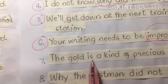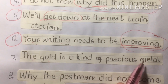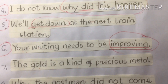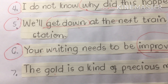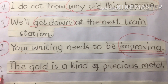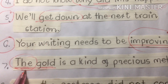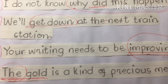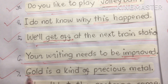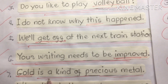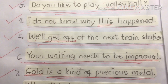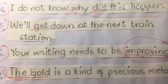Seven: 'The gold is a kind of precious metal.' The correct version is: 'Gold is a kind of precious metal.' Removing the article 'the' before gold gives us the right sentence. That's the correct subject-verb agreement — our subject is 'gold' and the special verb is 'is.'